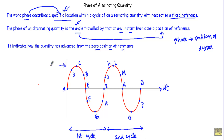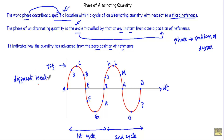With respect to this fixed reference point, all the points A, B, C, D, E, F, G, H, I, J, K, L, M, N, O, P will not indicate the same location of the waveform. That means all the points indicate different locations in the waveform, so they will indicate different phases of the waveform.